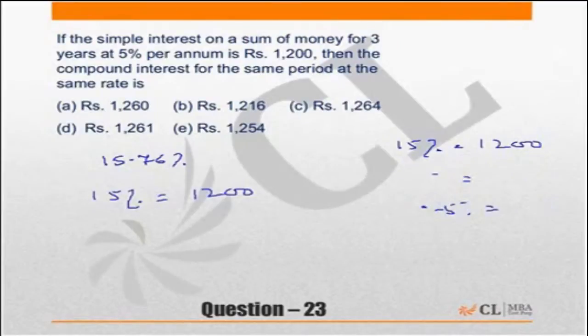Now I am getting, if 15% is 1,200, then 7.5% should be 600 and 0.75% should be 60.